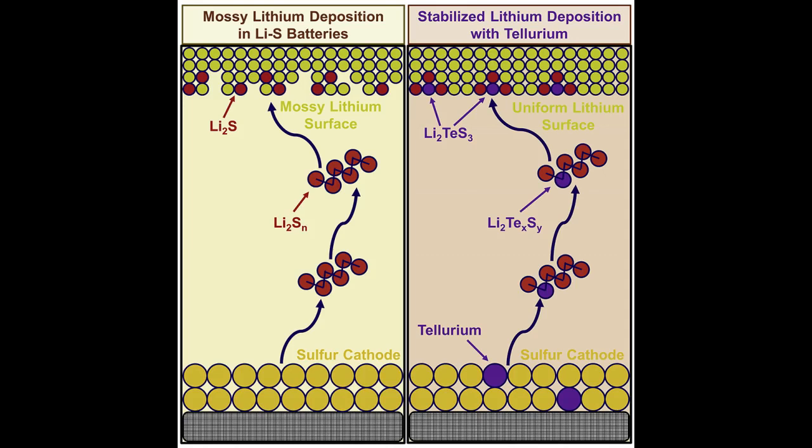The deposits break down the electrolyte that shuttles lithium ions back and forth. This can trap some of the lithium, keeping the electrode from delivering the full power necessary for the ultra-long use the technology promises. The reaction can also cause the battery to short-circuit and potentially catch fire.